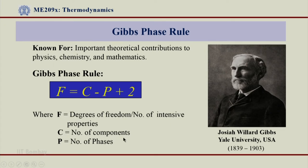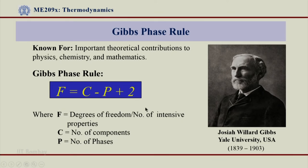C is the number of components. As far as water is concerned, we have only one component — be it in solid phase, liquid phase, vapour phase, solid plus liquid, liquid plus vapour, or solid plus vapour. Since it is a pure fluid, C is always equal to 1 for water. P is the number of phases, where we can have single phase, two phase, or three phases together depending on what region of the phase diagram we are focusing on. This is the famous Gibbs phase rule: F = C − P + 2.